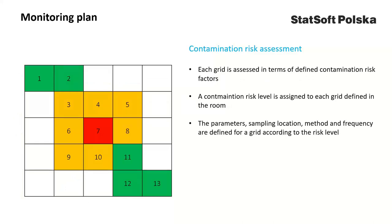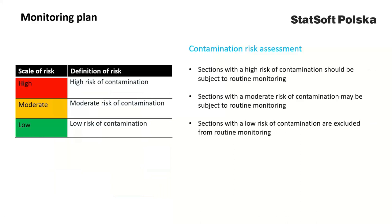Having defined risk factors and how to analyze them, we can evaluate each grid using contamination risk factors and assign a risk level to each grid. The parameters to be monitored, sampling locations, sampling methods, and frequency are defined for a grid according to the risk level. Sections with a high risk of contamination should be subject to routine monitoring. Sections with moderate risk of contamination may be subject to routine monitoring depending on the results of the qualification study. Sections with a low risk of contamination are usually excluded from routine monitoring, although some grids may be added as reference points.